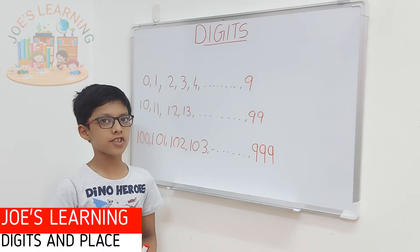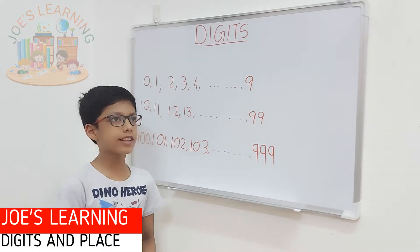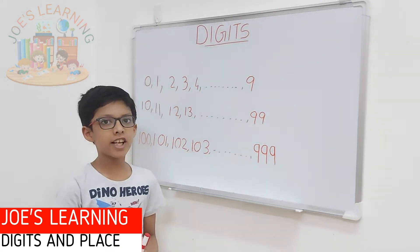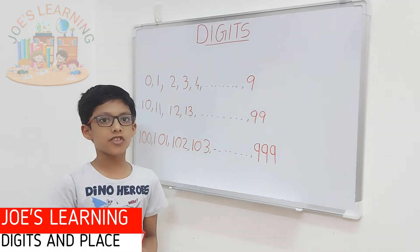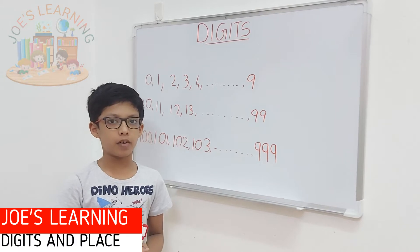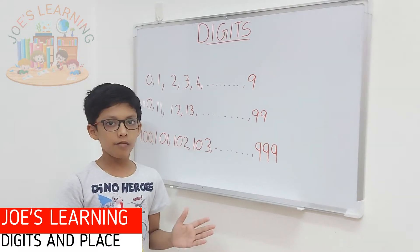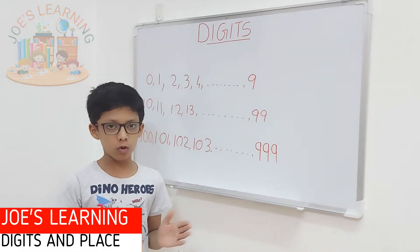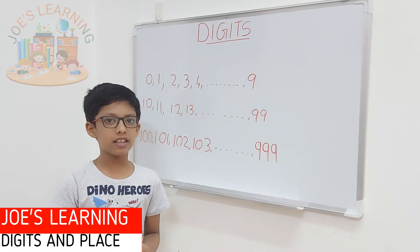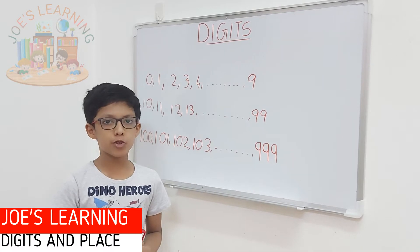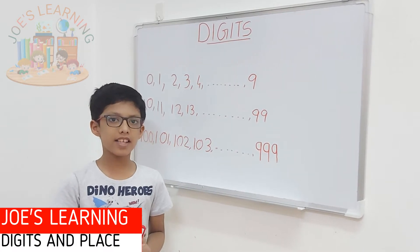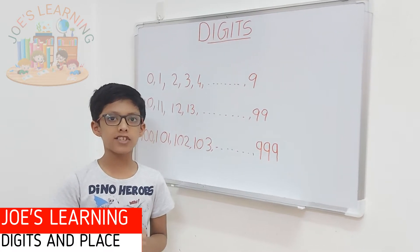First, let's understand what digits are. Digits are the symbols used to write a number. The symbols 0, 1, 2, 3, up till 9 are used to write numbers, and hence they are called digits.